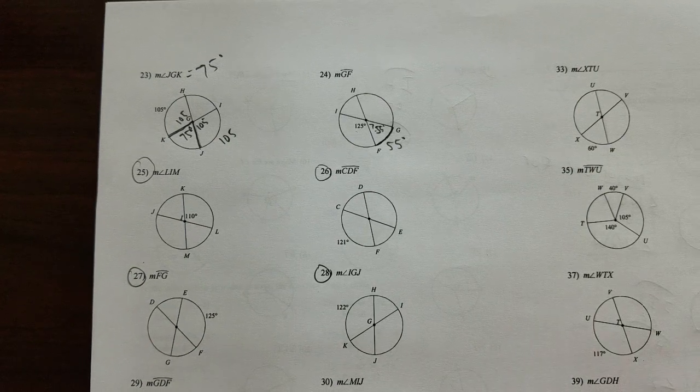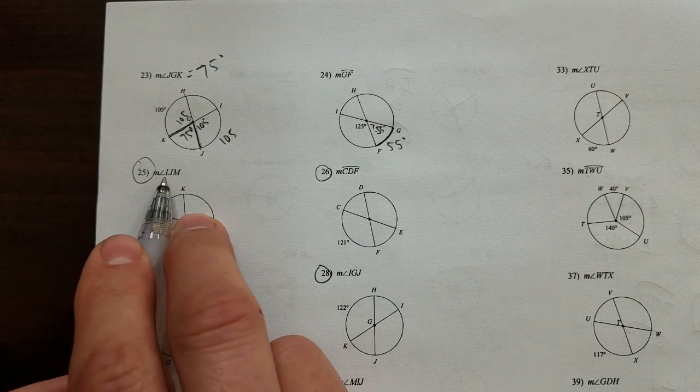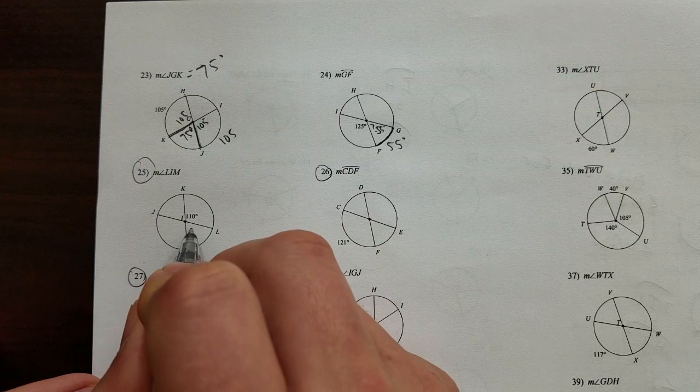All right, so assuming you did what you're supposed to do, 25 through 28. 25 says measure angle LIM. LIM is this one.